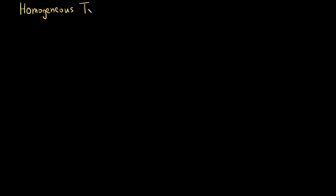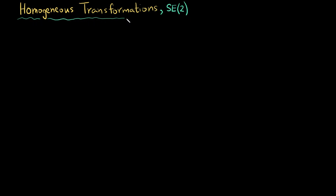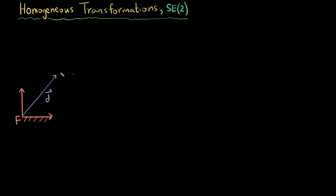Hi, I am Zain Khan and in this video we are going to talk about homogeneous transformations. They are also called the special Euclidean group, or SE for short. When dealing with 3D or spatial cases we call it SE3, and for planar cases we call it SE2.